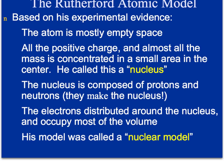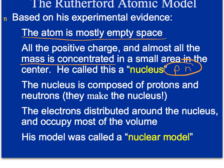From Rutherford's atomic model, we gained our modern atomic model: the atom is mostly empty space. All the positive charge and almost all the mass is concentrated in a small area in the center called the nucleus. The protons and neutrons are in the nucleus and are much larger than electrons, which is why most of the mass is found there. The nucleus is composed of protons and neutrons, while electrons are distributed around the nucleus and occupy most of the volume. This is now called the modern nuclear model.